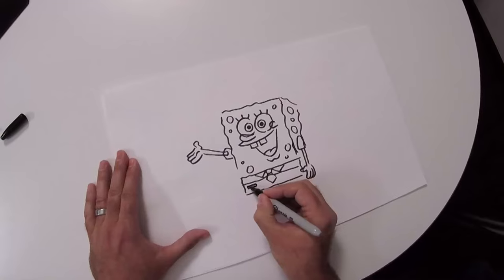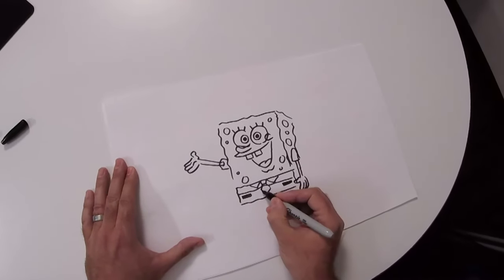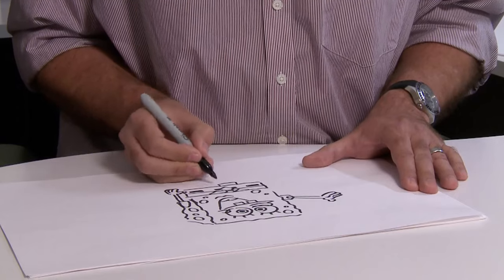And the belt is just like black rectangles. Line to either side, like this. And then one goes behind the tie, like this. His legs are more like shorts.